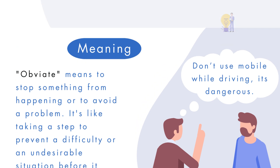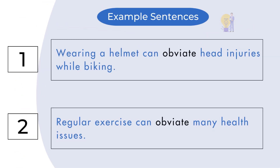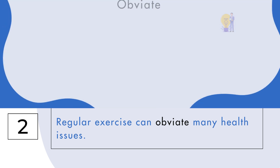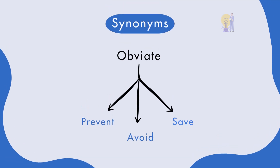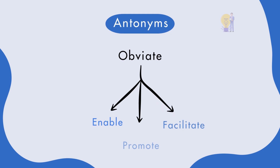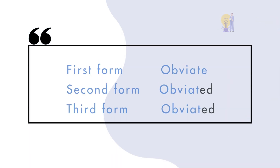The example sentences are: number one, wearing a helmet can obviate head injuries while biking; number two, regular exercise can obviate many health issues. Synonyms of obviate are: prevent, avoid, save. The antonyms are: enable, promote, facilitate.